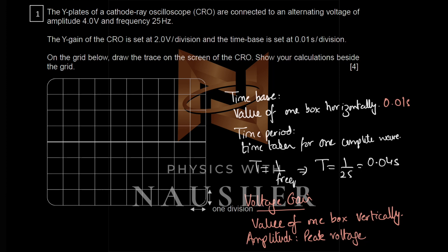Voltage gain is the value of one box vertically. Amplitude is the peak voltage. The peak voltage is four volts, and the Y-gain or voltage gain is two volts per division — one box vertically. So you need two boxes vertically, because four volts divided by two volts per box equals two boxes.